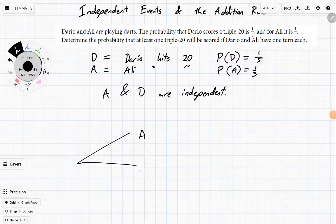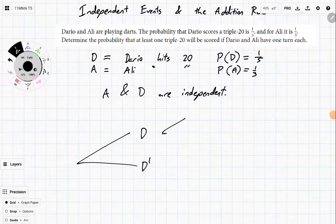So we have A and A'. Let's do Dario first. So either Dario hits or Dario misses, and then from there either Ali can hit or Ali can miss, and both options are fine.